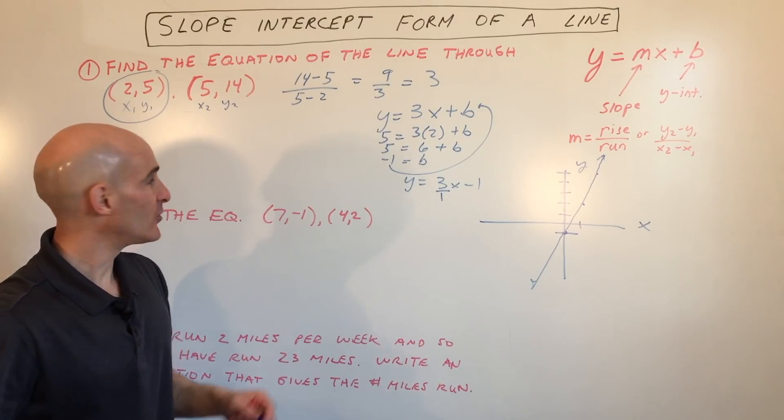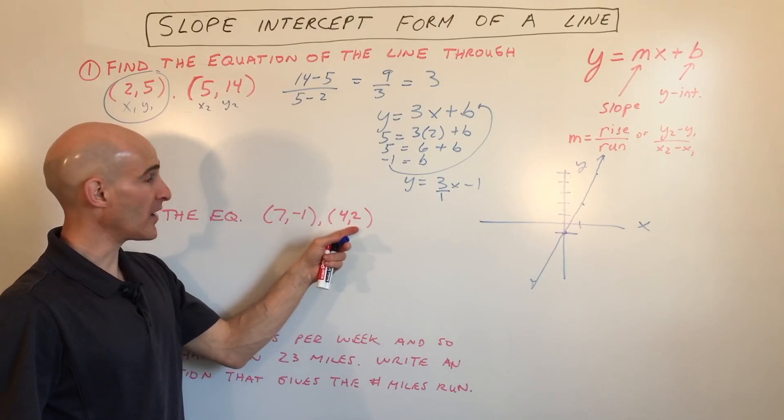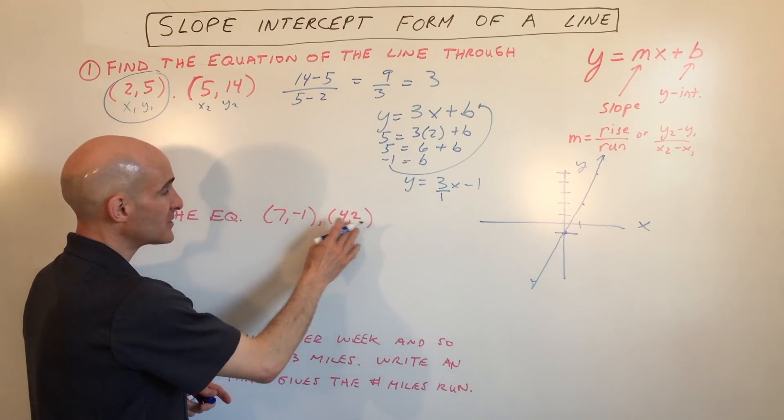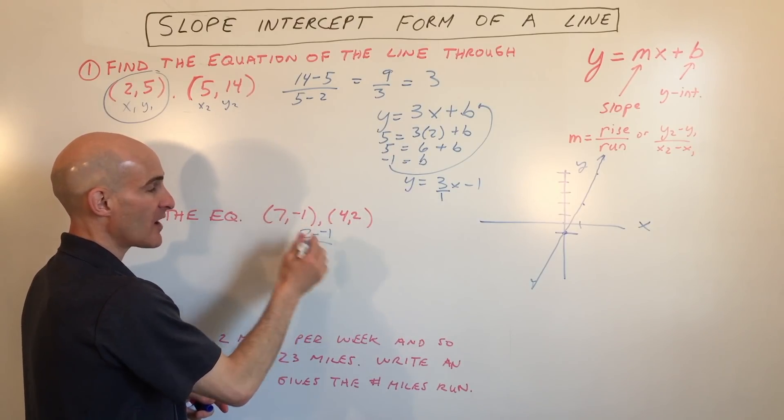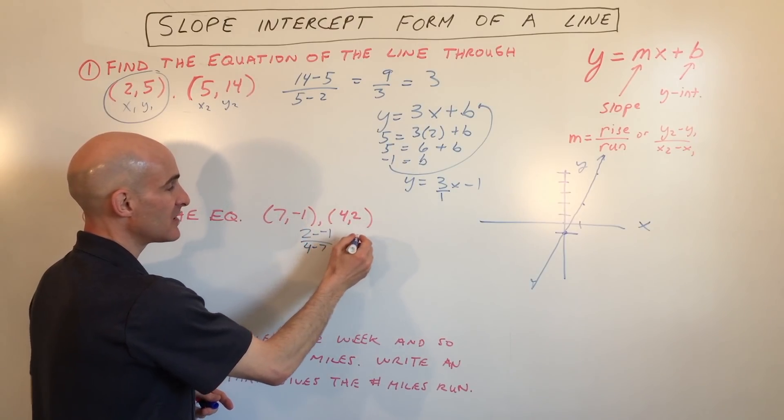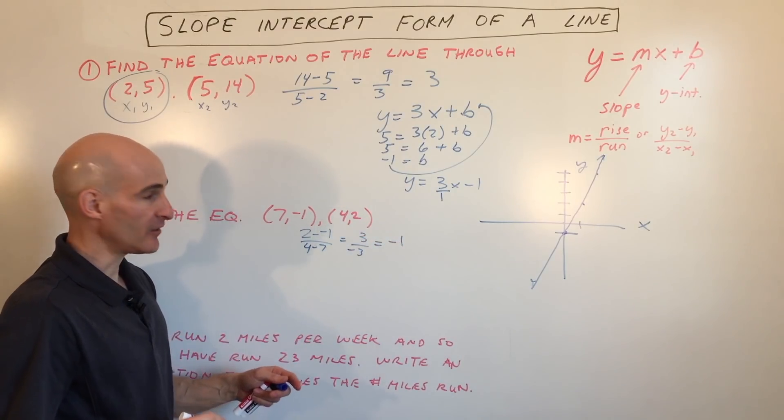Let's take a look at another example. Same idea - we're going to find the equation of the line that goes through these two points. We'll do the slope formula again. We take y2 minus y1, so 2 minus negative 1, over x2 minus x1, which is 4 minus 7. So we get 3 over negative 3, which equals negative 1.